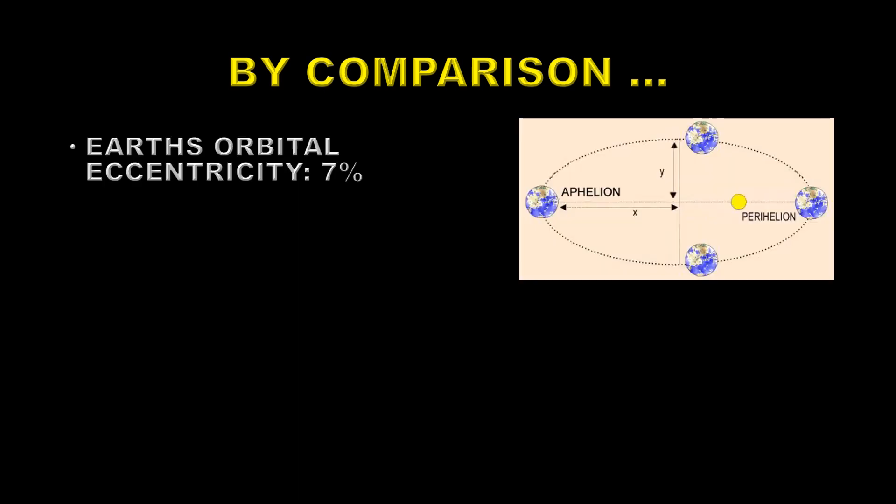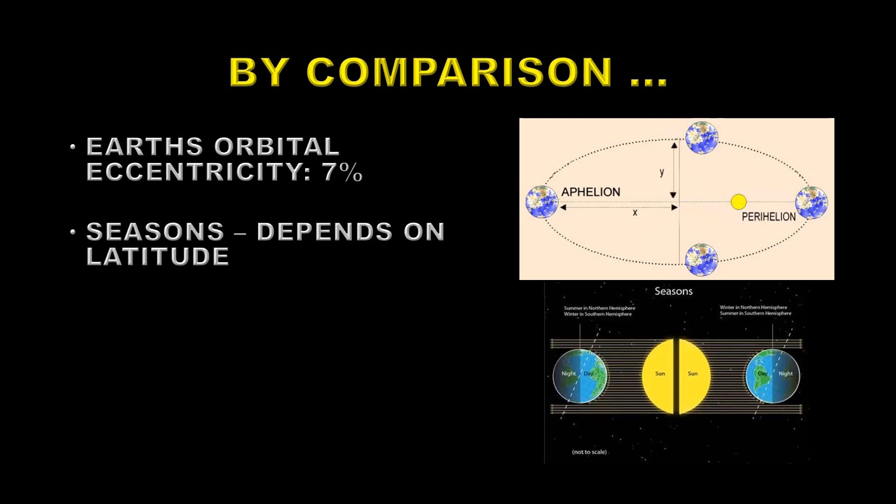There are some effects that produce much bigger effects on Earth's temperature. The Earth's orbital eccentricity changes the amount of energy we get by seven percent over a six month period. It's at maximum in January and minimum in July.